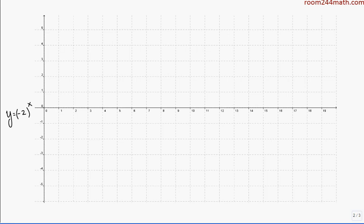So we can just create the values ourselves. If we have an x value of 1, negative 2 to the power of 1 is simply negative 2. Negative 2 to the power of 2, when you square a negative, you get a positive, so it's going to be positive 4.